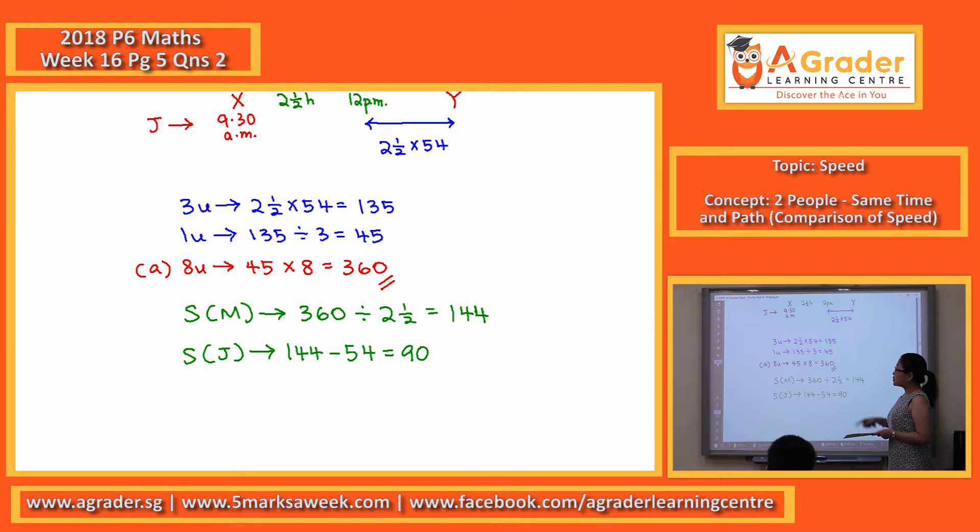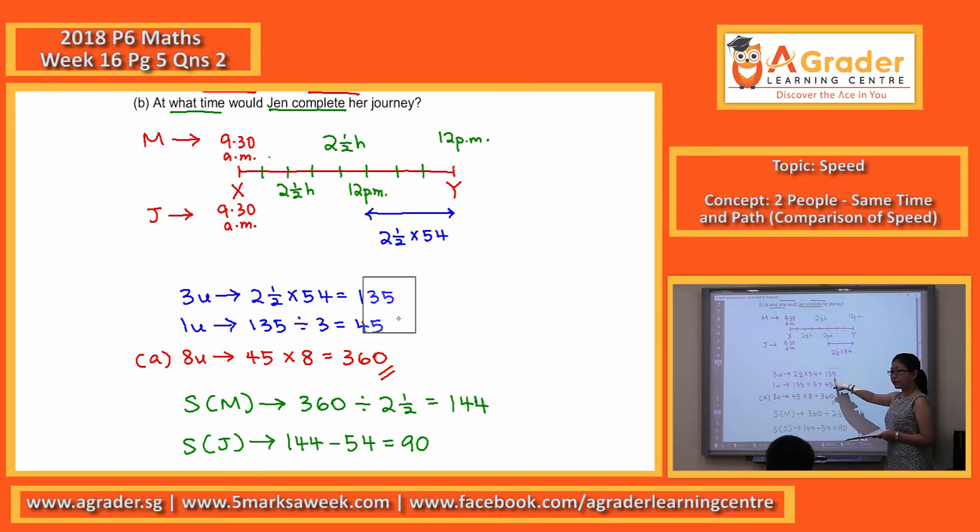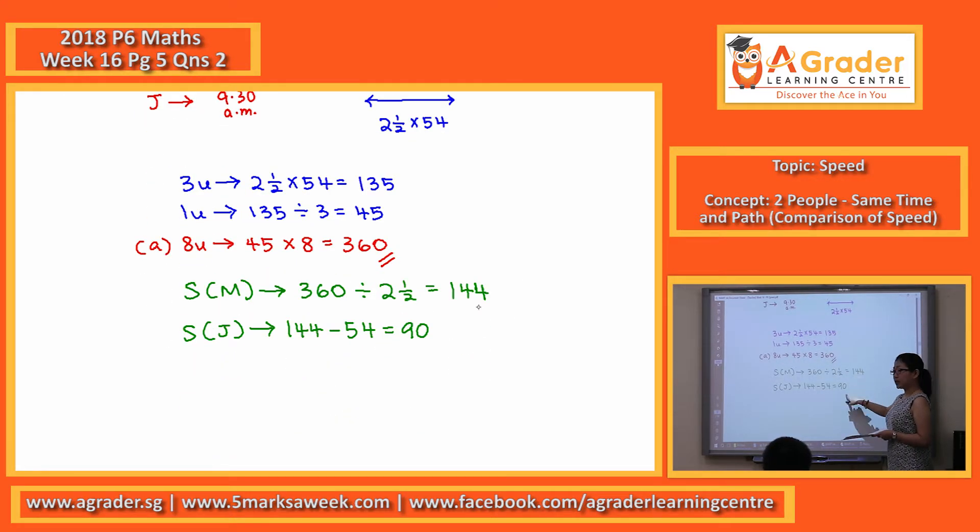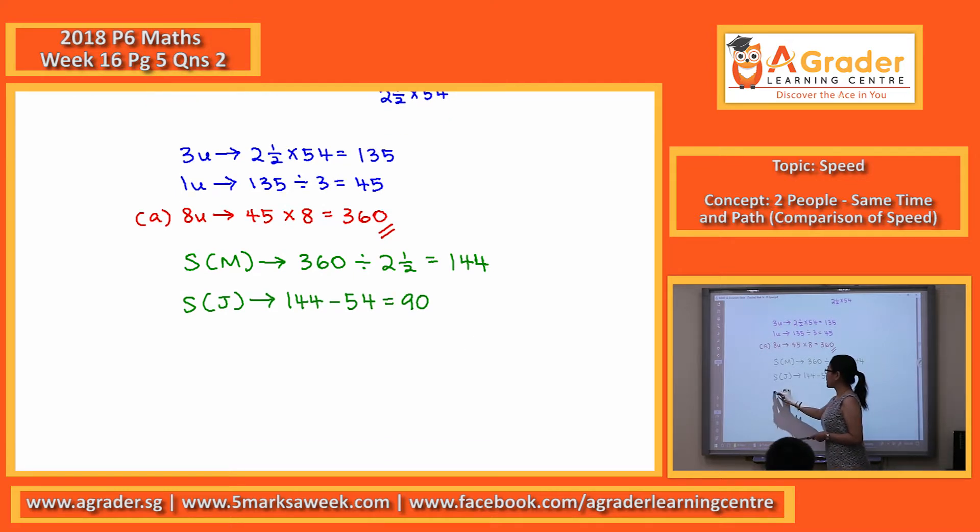So distance she has to travel, the 135 km, her speed at 90, to find the time taken of Jen, she will take one and a half hours.